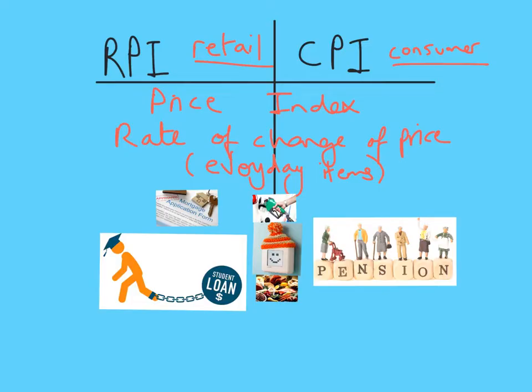One final note on the RPI and CPI: they are both chain-based index numbers that we looked at in the previous video, and they show annual or monthly percentage changes in price.